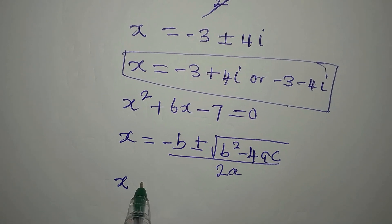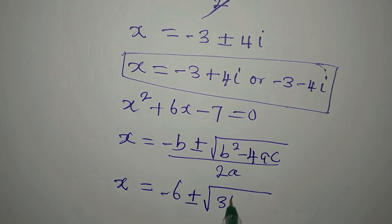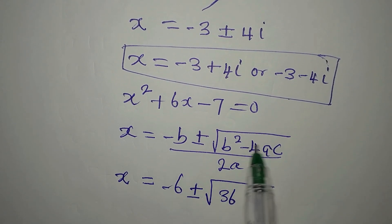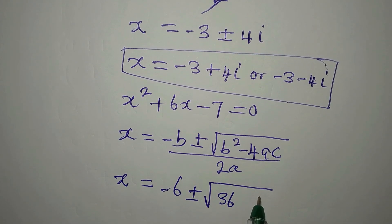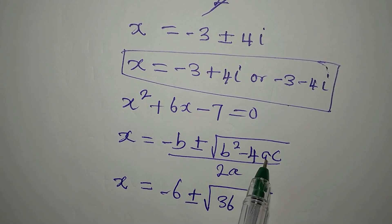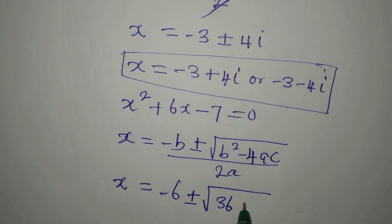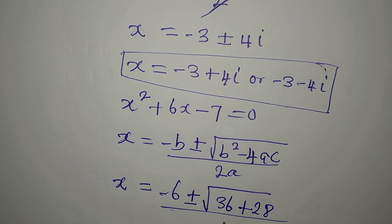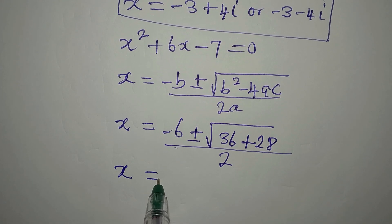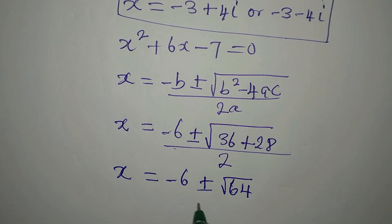So x = −b = −6, plus or minus √(b² − 4ac). That is √(36 − 4 × 1 × (−7)). Note that 4 × 1 × (−7) = −28, so we get −4 × (−7) = +28. So under the root we have 36 + 28 = 64, all divided by 2 × 1 = 2.